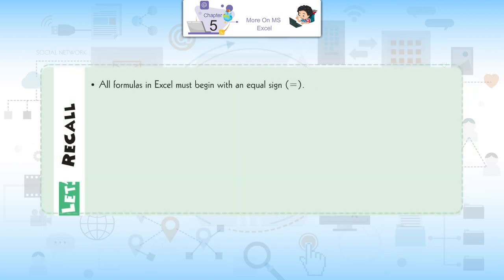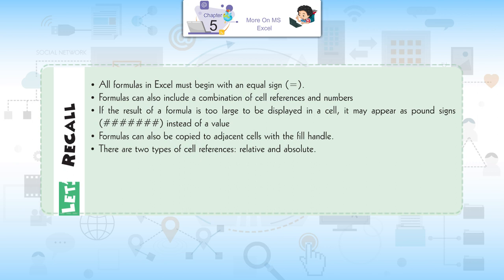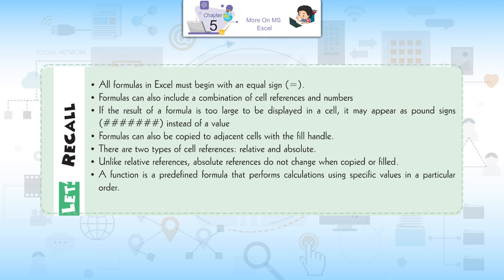Let's recall: All formulas in Excel must begin with an equal sign. Formulas can also include a combination of cell references and numbers. If the result of a formula is too large to be displayed in a cell, it may appear as pound signs. Formulas can also be copied to adjacent cells with the fill handle. There are two types of cell references — relative and absolute. Unlike relative references, absolute references do not change when copied or filled. A function is a predefined formula that performs calculations using specific values in a particular order. The recently used command gives you access to functions you have recently worked with.